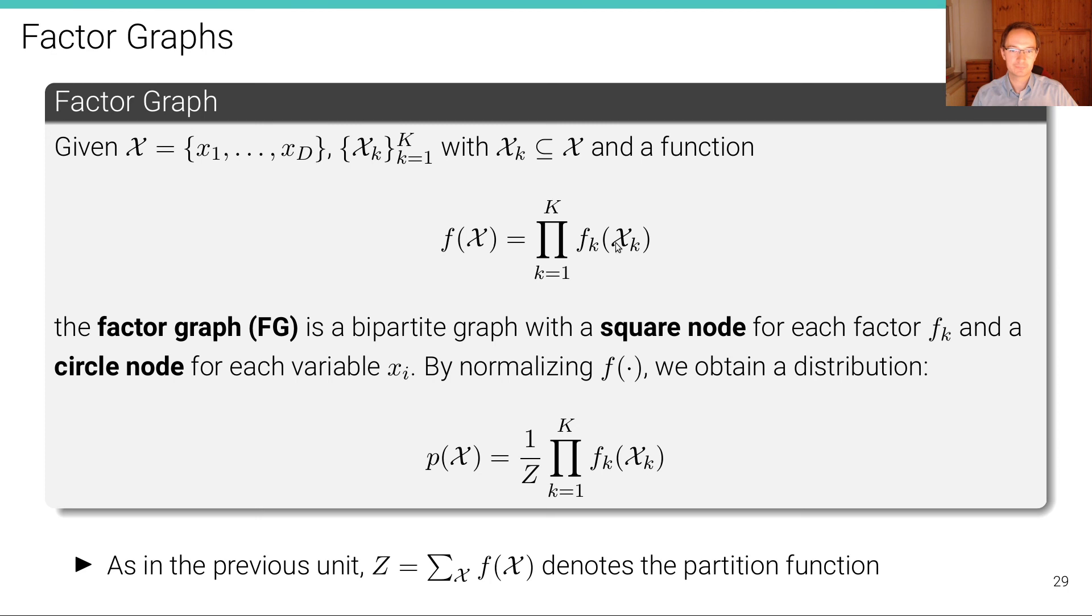And a function f of all random variables, that is a product of factors, where we have capital K factors now. So it's a product of K factors of these subsets. So for each of these subsets, we have defined one function. It's now called a factor, and we use an f to make explicit that it's a factor. The factor graph, or short FG, is a bipartite graph with a square node for each factor Fk and a circle node for each variable xi.